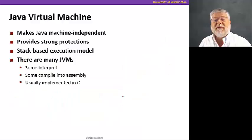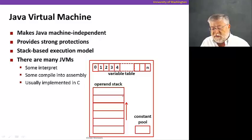Alright, so let's focus in on the Java virtual machine. As we said, this is what makes Java more machine independent than some other languages. The Java virtual machine also provides some very strong protections for the language that sort of keep people out of trouble, programmers out of trouble, unlike C, which lets us run amok and do anything we want with the memory and references into that memory. Java uses a stack-based execution model. And there are many different kinds of Java virtual machines. Some do more interpretation, some compiled into assembly. They're usually implemented in a language like C, however.